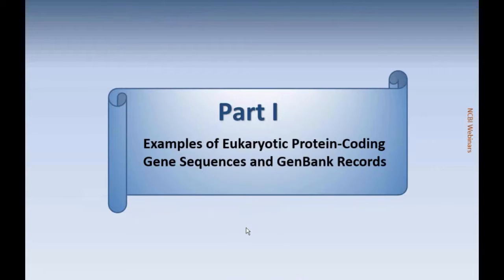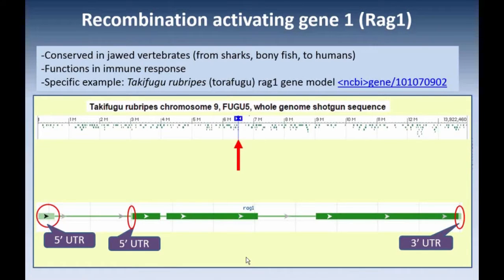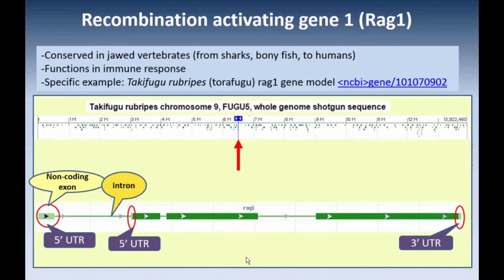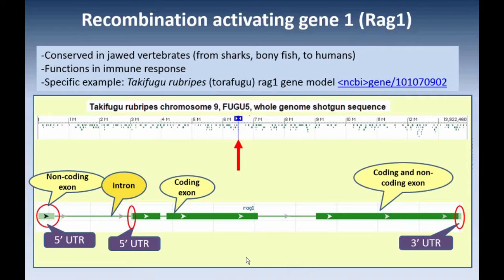Our first part will be going through some of the eukaryotic protein-coding gene sequences and the corresponding GenBank records. RAG1 is our example. This is showing the Takifugu gene, and there are four exons for this gene in the puffer fish. The first exon is a non-coding exon — it has the five prime UTR, or untranslated region. Then it's followed by an intron, and then there are additional exons for the rest of the gene.